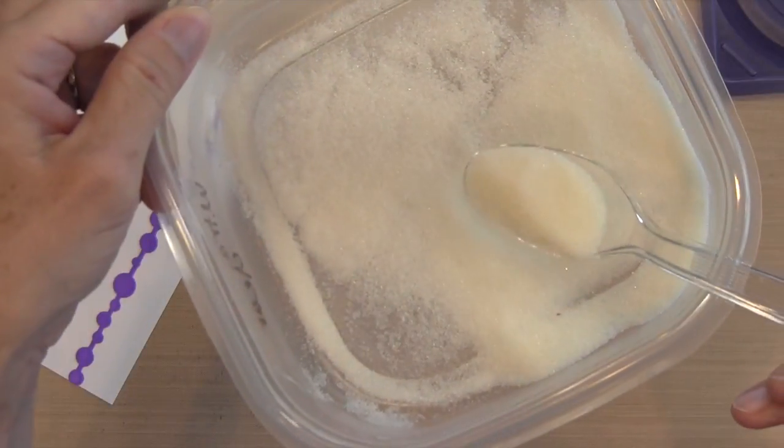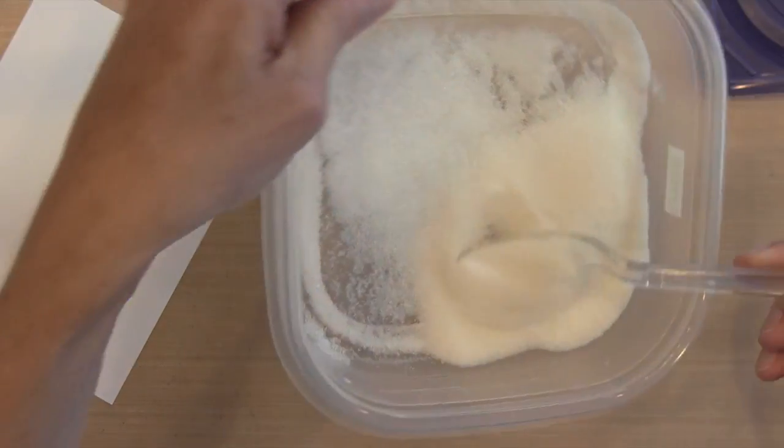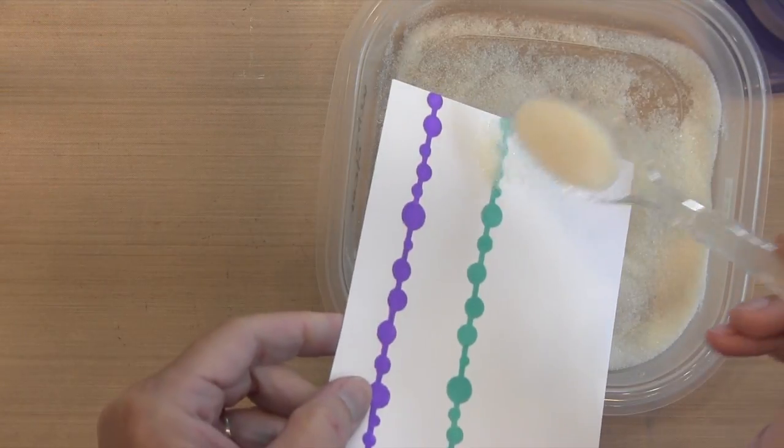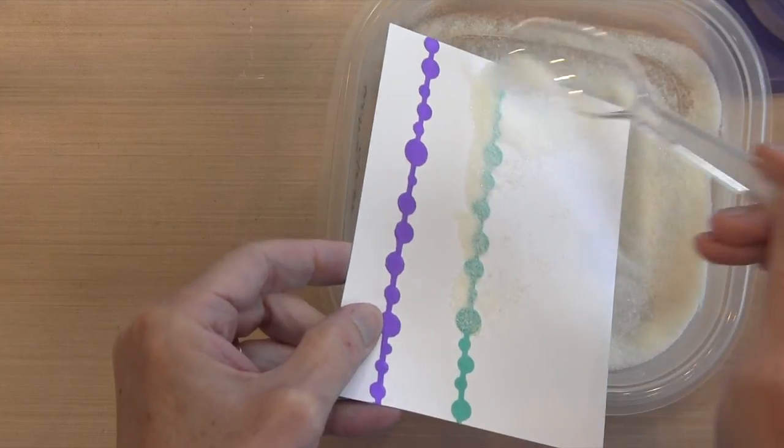Once I get this whole thing covered, I'm going to take my ultra thick embossing enamel. It's just really thick clear embossing powder and you can see it's kind of like a granulated sugar, so it's not fine at all. I'm going to sprinkle it over the Peacock Feathers that I went over with that VersaMarker.